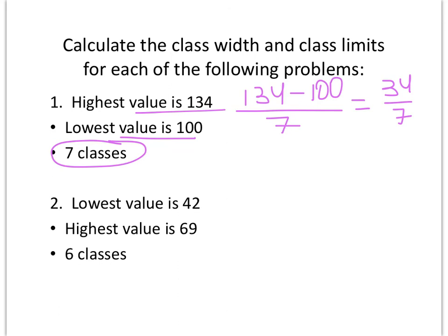When you do that, you're going to get approximately 4.86. So we want to round up to the next whole number, so our class width will be 5 for the class width.